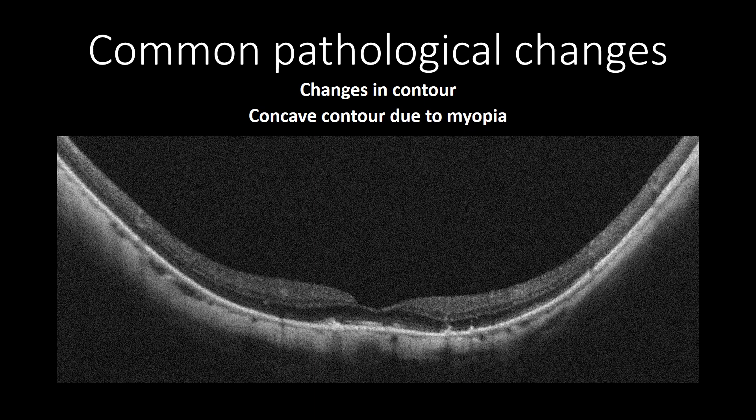In myopia, changes in contours can vary, and I will dedicate a full presentation to myopic changes. However, the most common changes are concave, which can be regular or irregular. This OCT cross-section shows concave shapes symmetrical on both sides of the sclera, which is curved posteriorly symmetrically around the fovea. In a nutshell, whenever there are concave contour changes, myopia should be suspected.